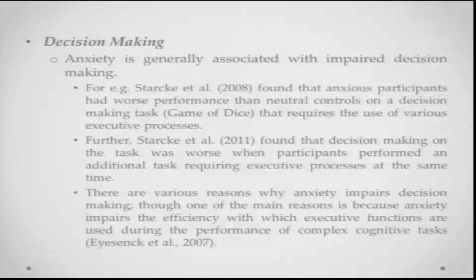Now let us talk about the relationship between anxiety and decision making. Anxiety is generally associated with impaired decision making. People commonly advise: do not be anxious, relax yourself, and then make the decision — and experimental evidence supports this. Stark and colleagues in 2008 found that anxious participants had worse performance than neutral controls on a decision making task requiring executive processes, such as response inhibition, shifting of responses, weighing particular responses, and controlling trains of thought.